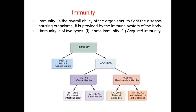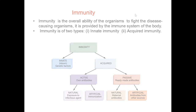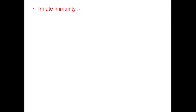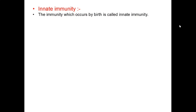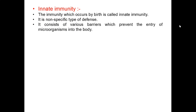So this is the classification of immunity. Now, innate immunity. The immunity which occurs by birth is called innate immunity. It is a non-specific type of defense system of the body. It consists of various barriers which prevent the entry of microorganisms into the body.